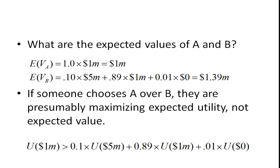Let's take a look at the expected values of A and B. The expected value of A is 100% of a million dollars, so the expected value is a million. In the case of B, the expected value is 10% times 5 million, plus 89% times 1 million, plus 1% times zero — so it turns out to be 1.39 million. So if someone chooses A over B, they are presumably maximizing expected utility, not expected value, because if they were maximizing expected value, they would choose B.